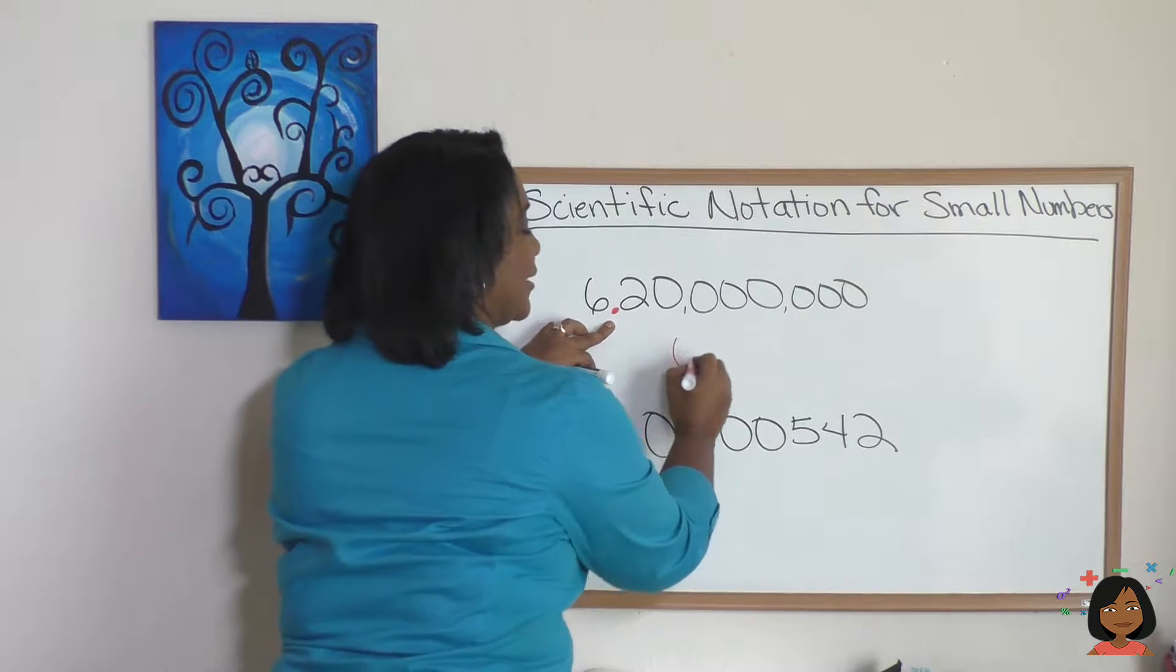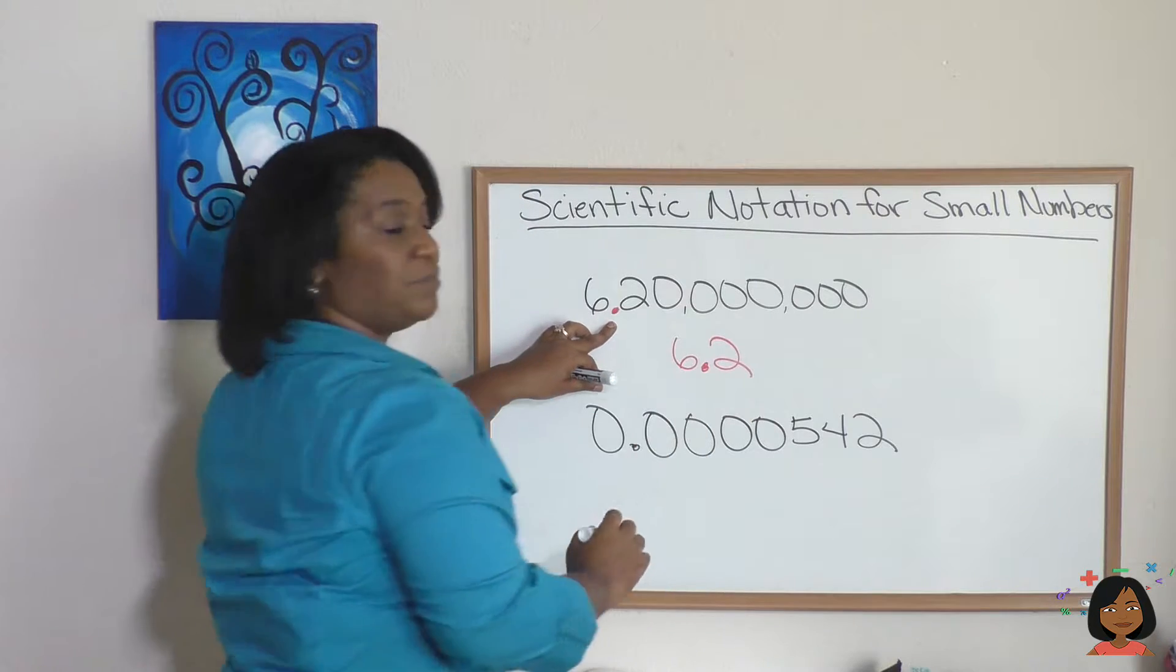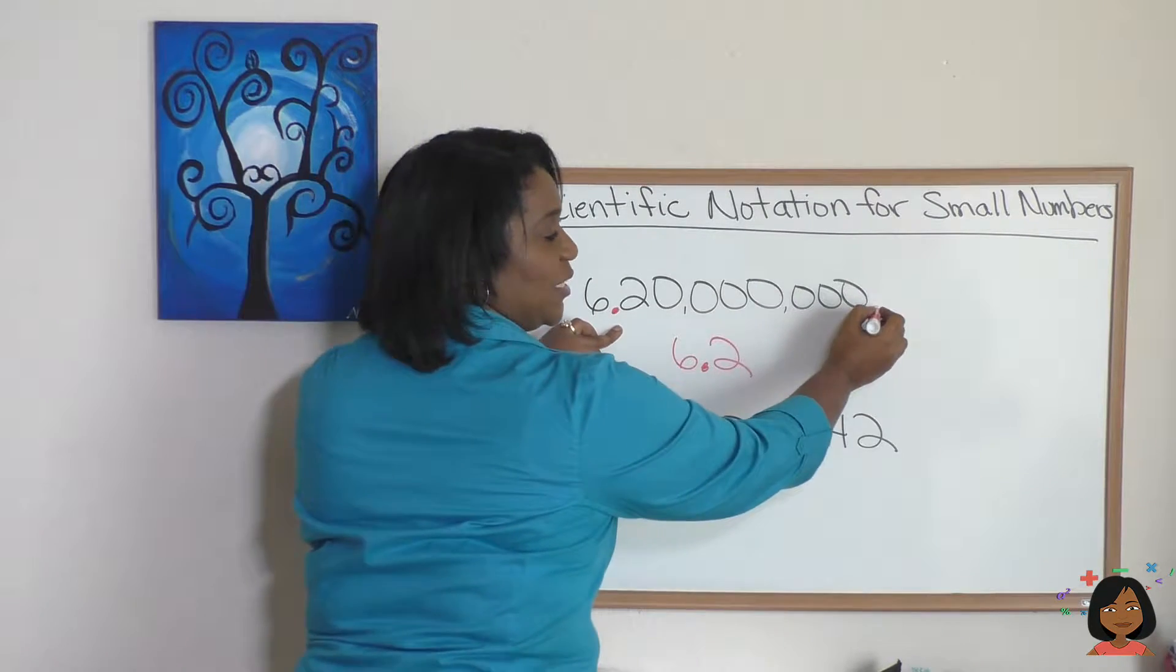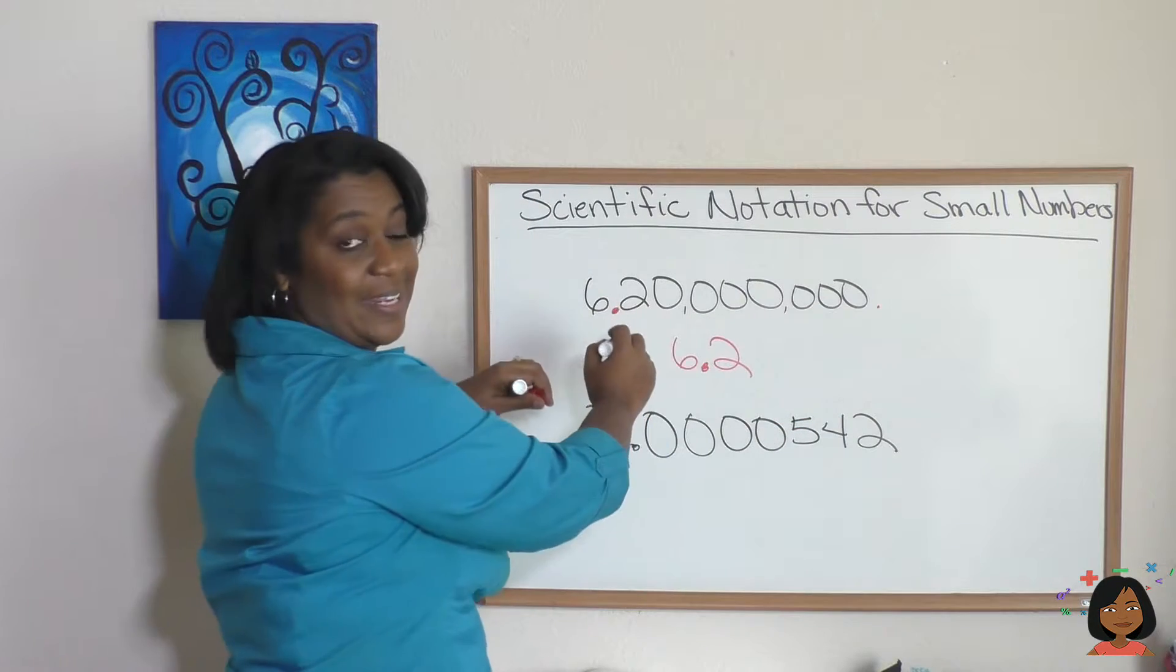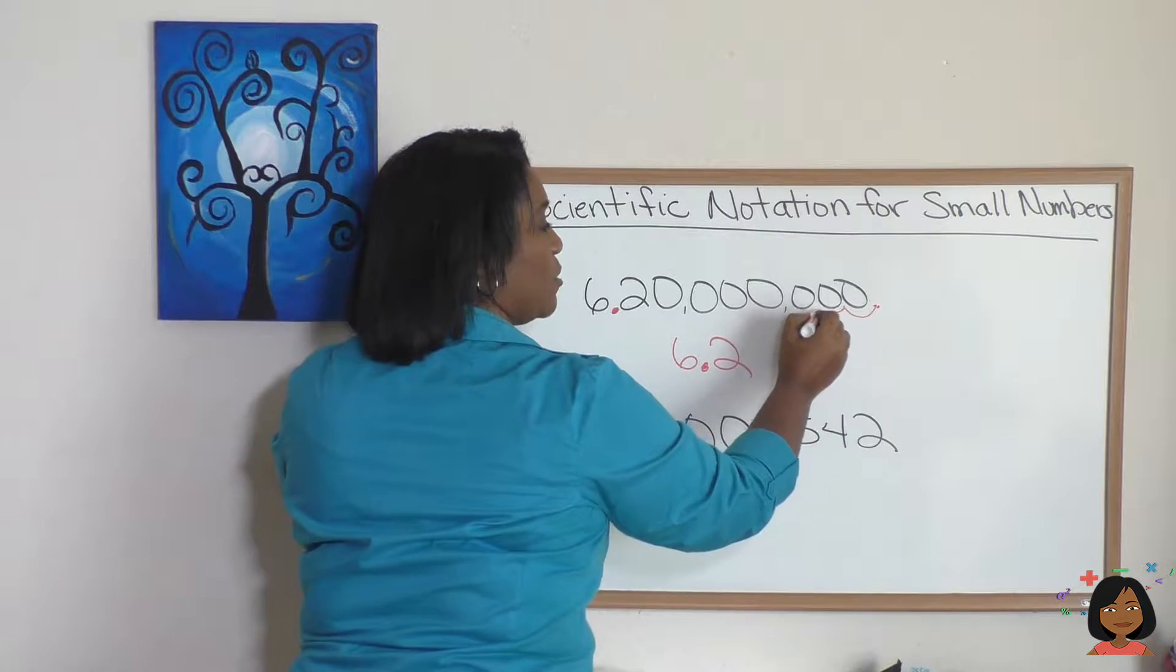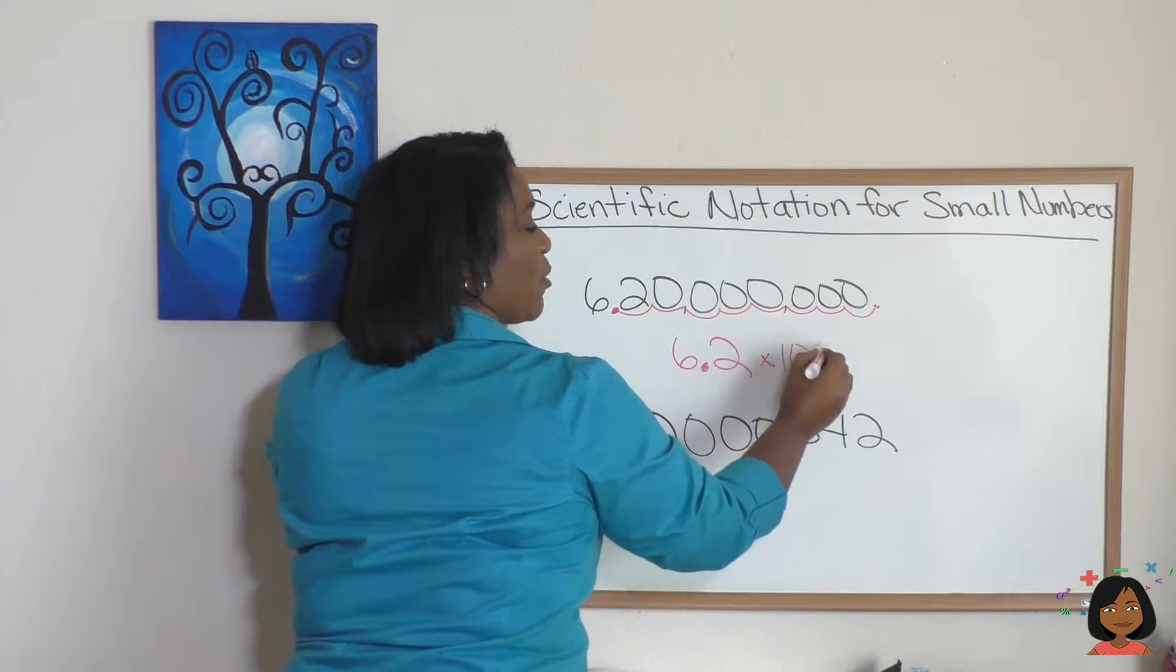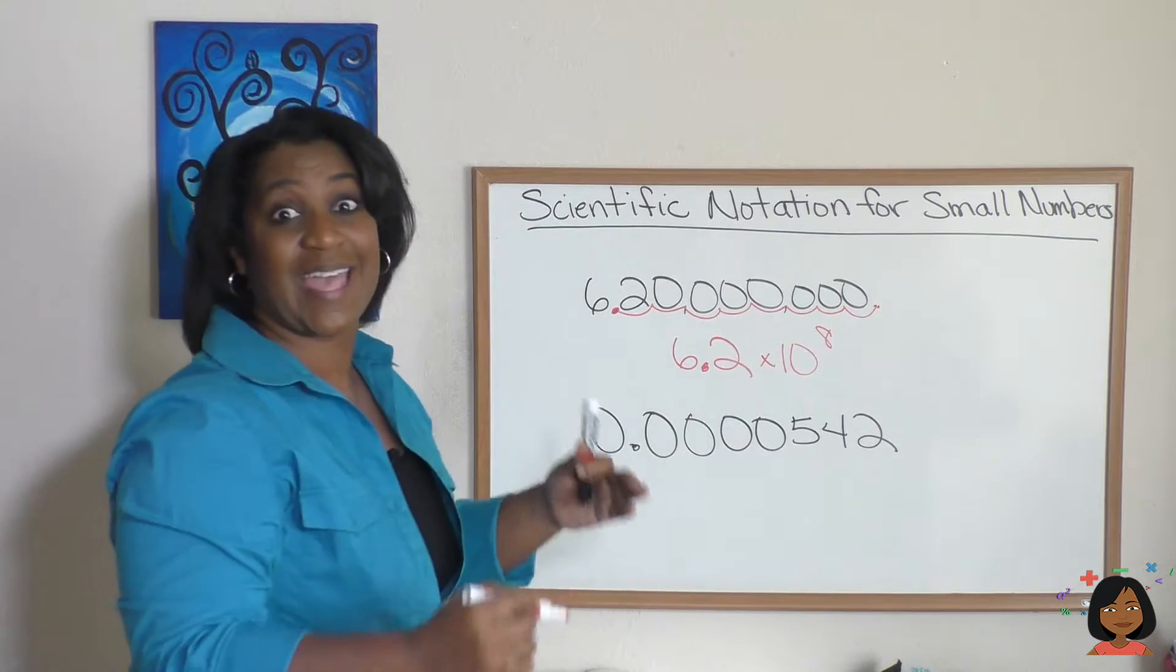So we know that we're going to have a number that looks like 6.2, and now we count how many decimal places we need to shift our decimal to get here. 1, 2, 3, 4, 5, 6, 7, 8. Our answer was 6.2 times 10 to the eighth. That's how we do scientific notation for large numbers.